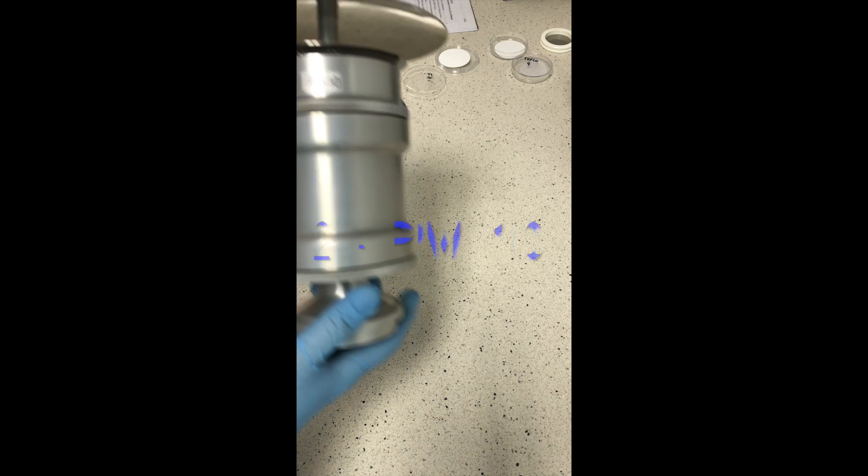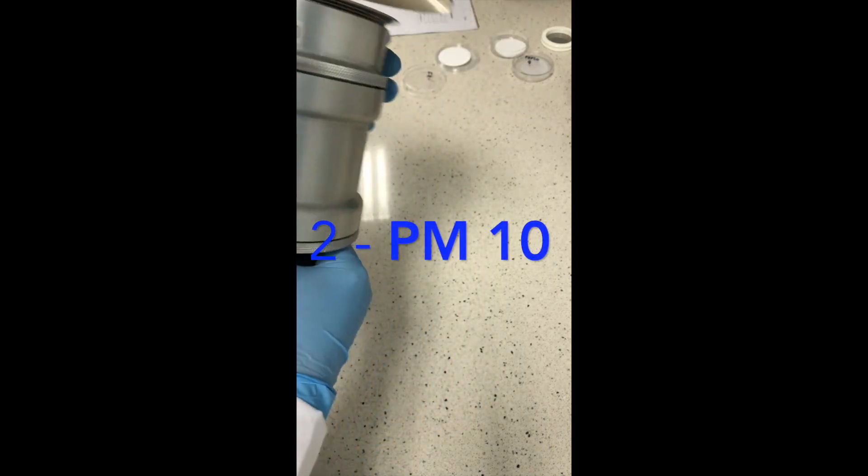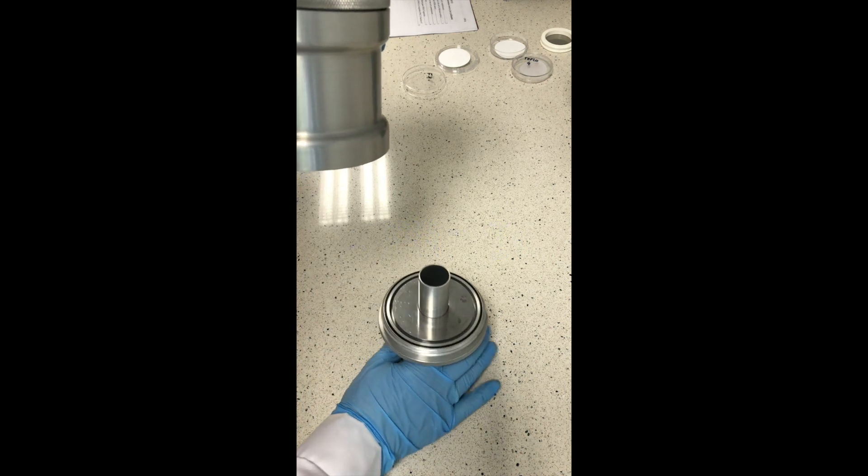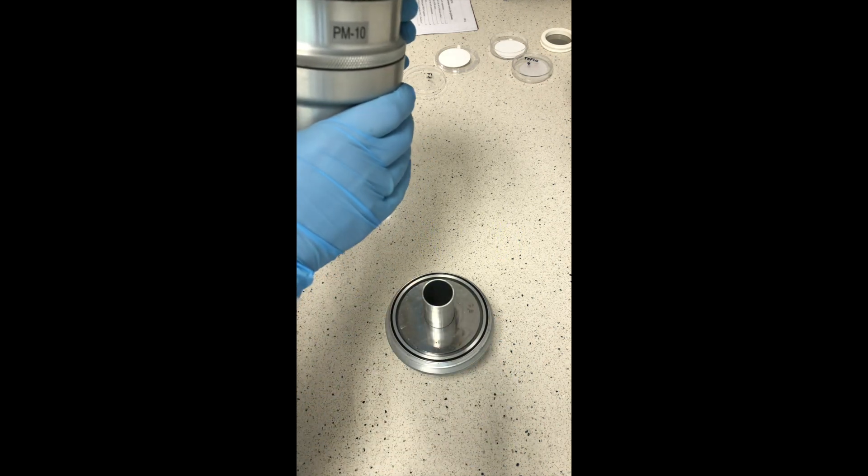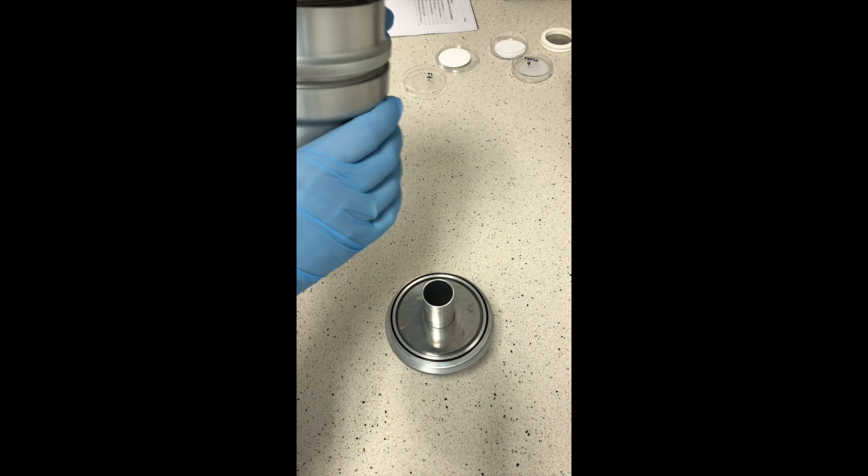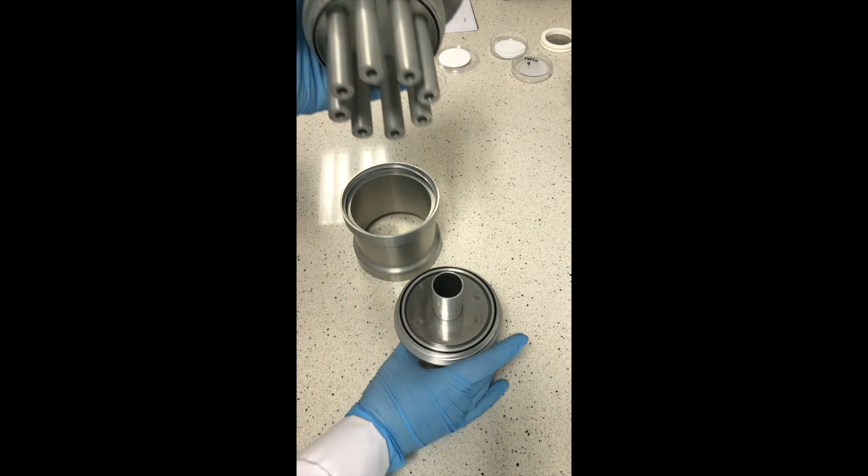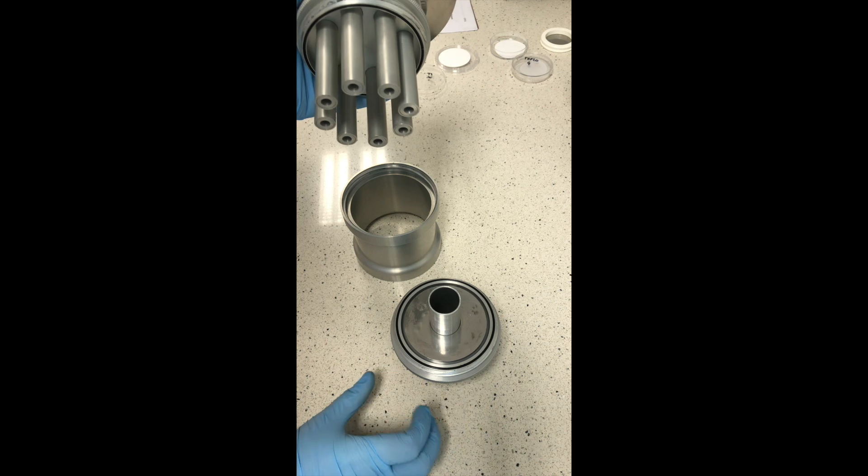The second one is PM10. So we have the head which is collecting the samples, the particles lower than 10 micrometers. And it looks like this.